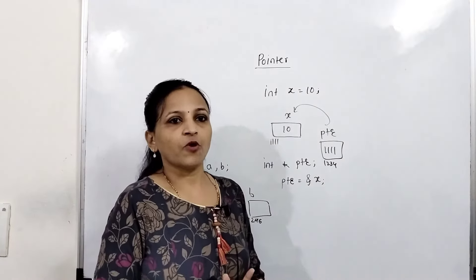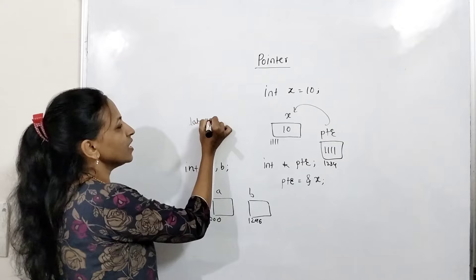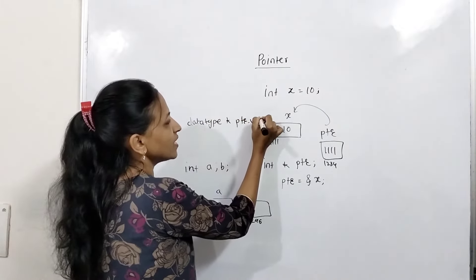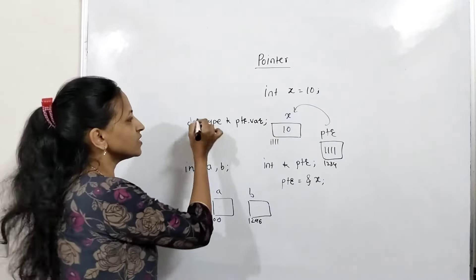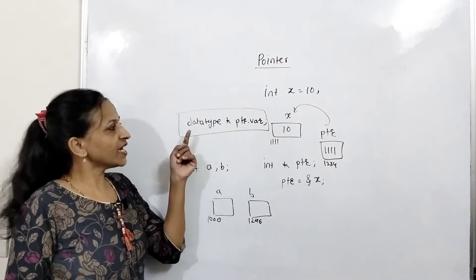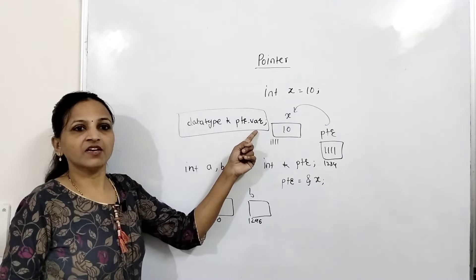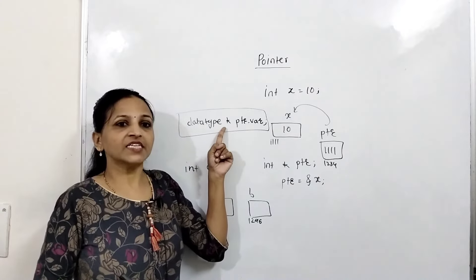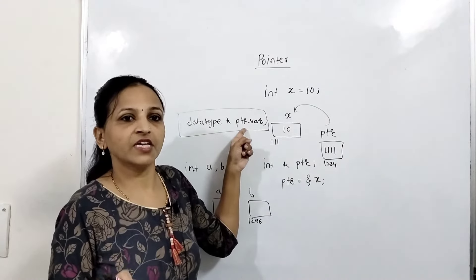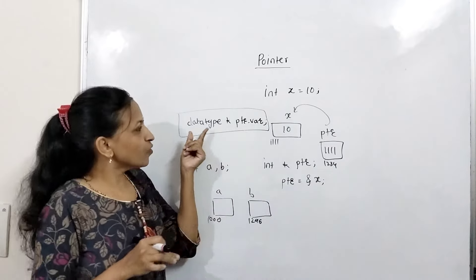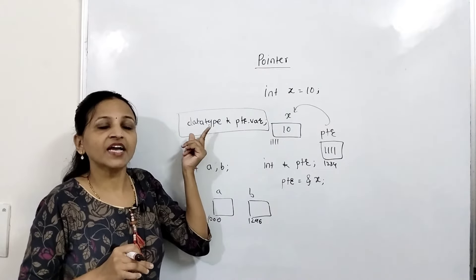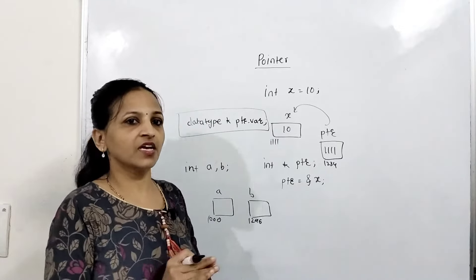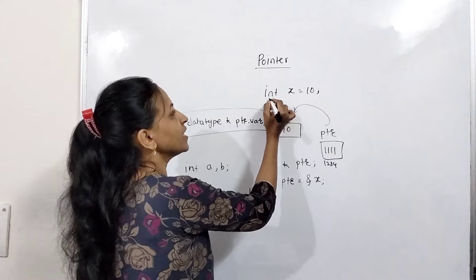Now, how do we declare a pointer? The syntax is: data type, then write star, then write the pointer variable name. So it is: data type * ptr_variable. Here, star indicates that this is not an ordinary variable — this is a pointer variable. The data type tells which type of variable's address this pointer will hold.